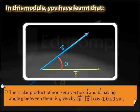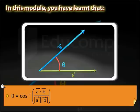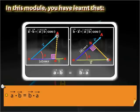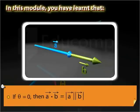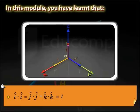In this module, you have learned that the scalar product of non-zero vectors A and B having angle theta between them is given by the magnitude of vector A times the magnitude of vector B times cos theta. The angle theta between vectors A and B is given by the inverse cosine of the dot product of vectors A and B divided by the product of their magnitudes. The dot product of two vectors is the product of their magnitudes when theta is equal to 0. The dot product of unit vectors I cap, J cap, and K cap with themselves is equal to 1.